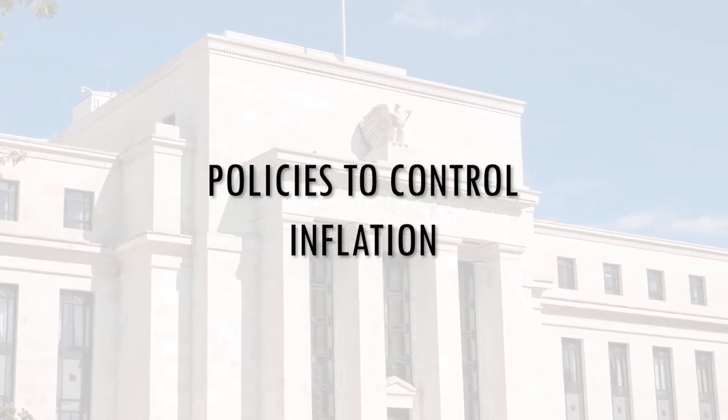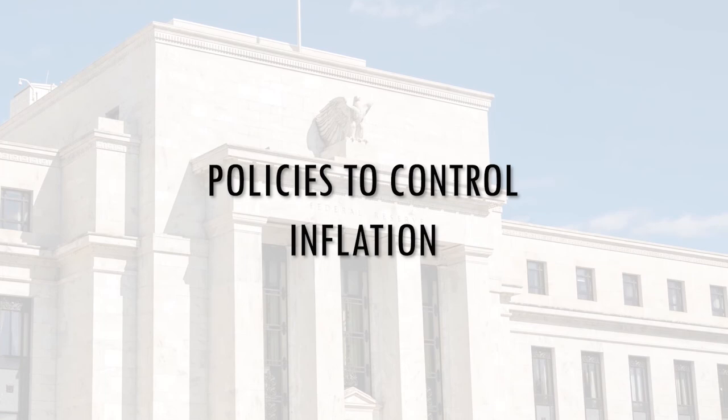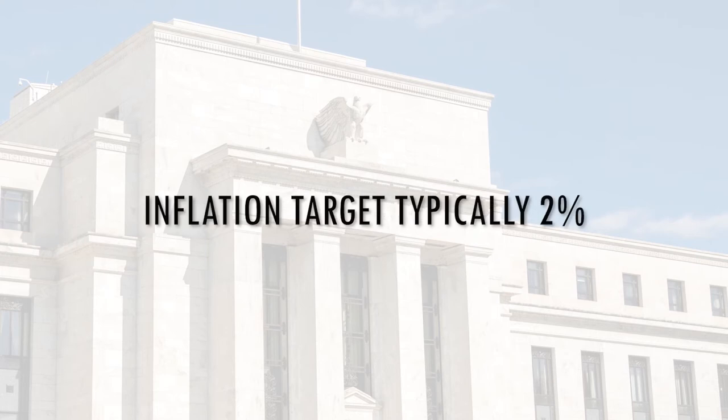Governments and other policymakers have at their disposal a wide array of individual policies to help them achieve their objectives, which include a reduction in inflation, which means keeping the rate of inflation within certain limits, typically around 2% per year in most countries. Policies can be put into one of two main categories: those that influence demand and those that influence supply, commonly called demand-side and supply-side policy.